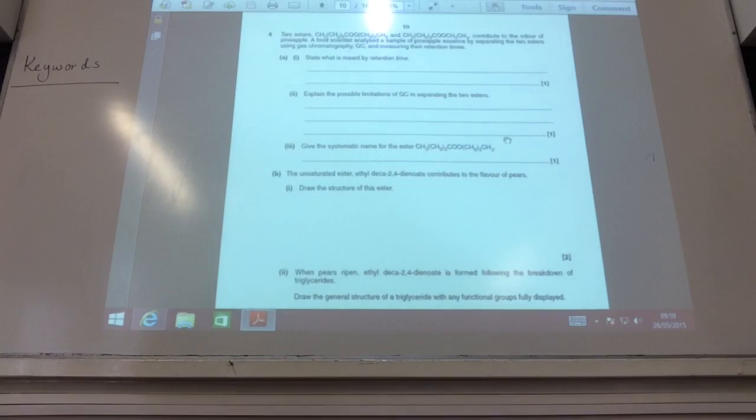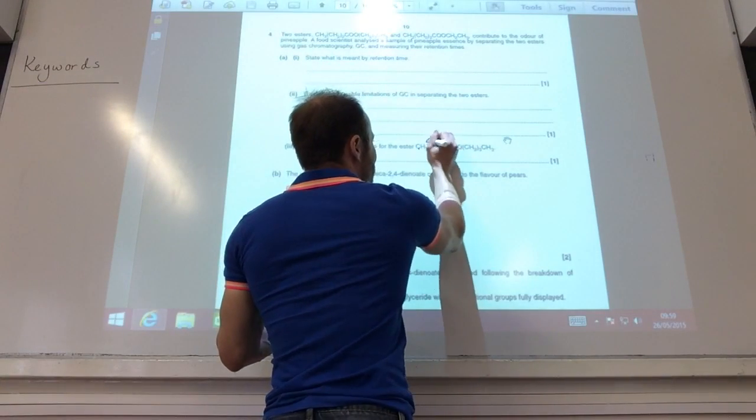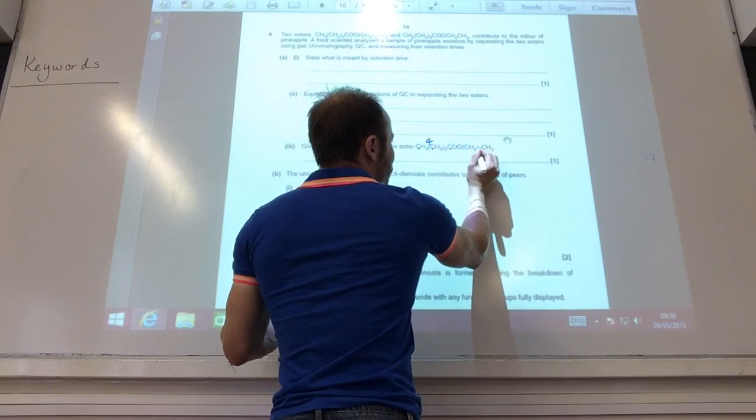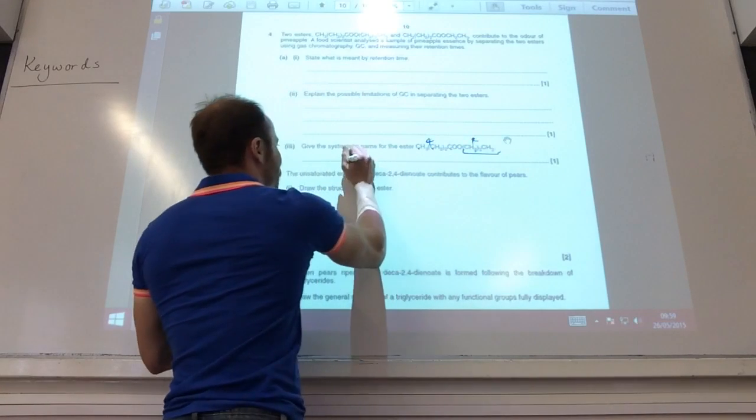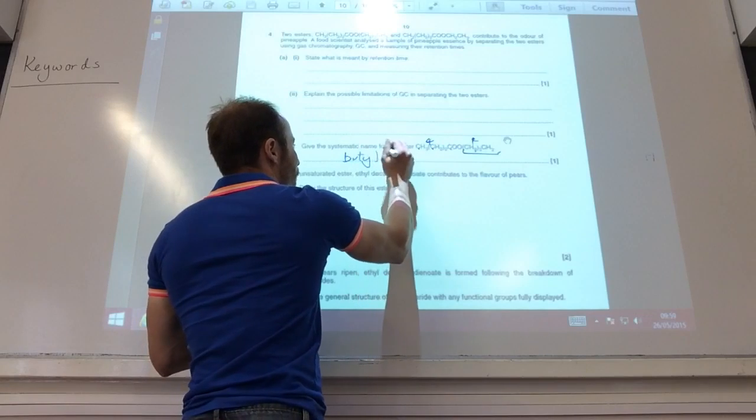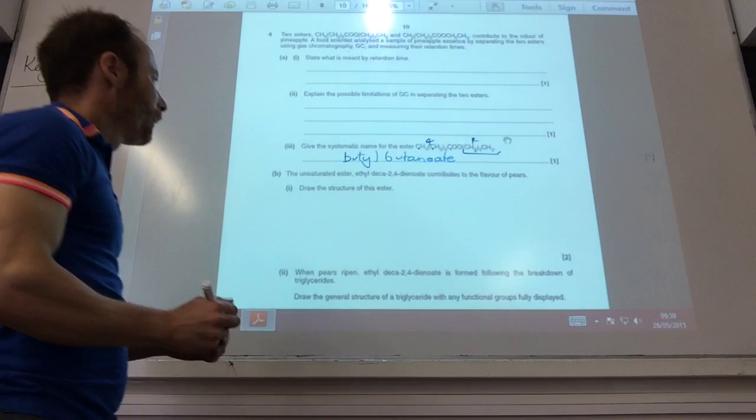Systematic name for that ester there. You've got one, two, three, four carbons on that end. One, two, three, four on that one. That has come from the alcohol, so it is butyl butanoate, like so.